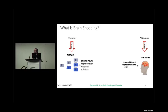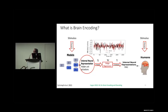In brain encoding, we present a stimulus to a language model and get internal representations of the stimulus. The same stimulus is shown to a subject and we get fMRI. A simple ridge regression model takes stimulus representation as input and outputs fMRI. We use correlation to evaluate model performance.